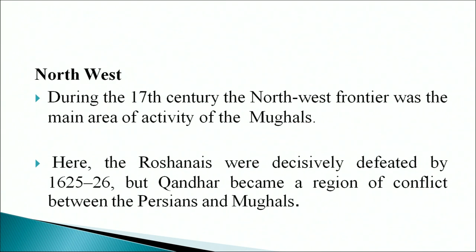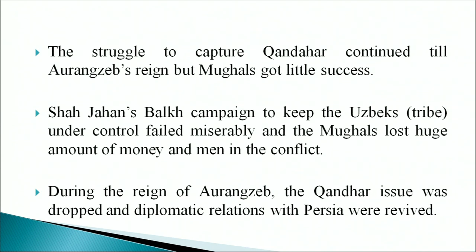During the 17th century the northwest frontier was the main area of activity for the Mughals. The Raushanis were decisively defeated by 1625-26, but Kandahar became a region of conflict between the Persians and the Mughals. The struggle to capture Kandahar continued till Aurangzeb's reign but the Mughals achieved little success. Shah Jahan's bold campaign to keep the Uzbek tribes under control failed miserably, and the Mughals lost a huge amount of money and men in the conflict. During the reign of Aurangzeb the Kandahar issue was dropped and diplomatic relations with Persia were revived.